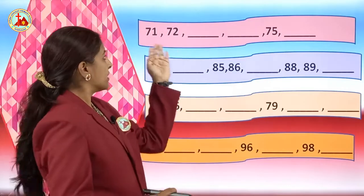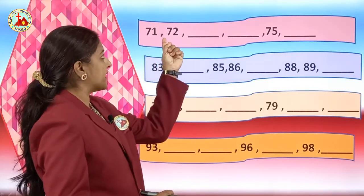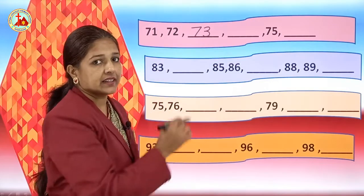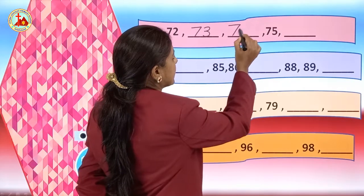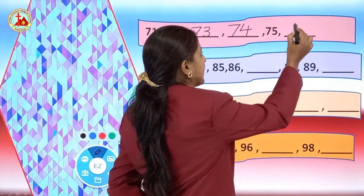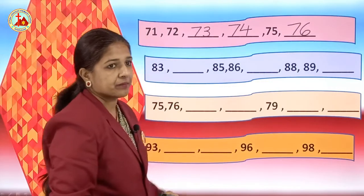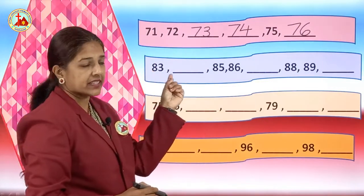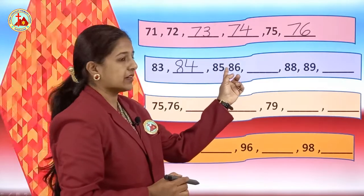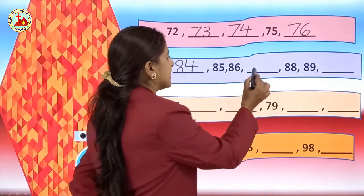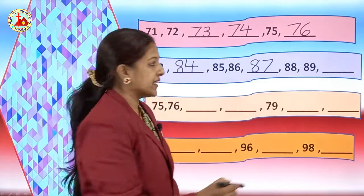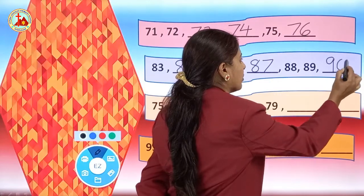Now 71. 72 is written. After 72, 73. Touch the line and write, children. After 73, 74. After 73, 74 and 75 is written. And after 75, 76. On the next line you can see 83. The next missing number is 84, then 85, 86, and then 87. Then 88, 89, and after 89 the missing number is 90.